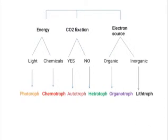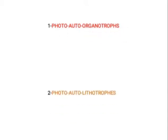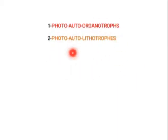We can classify bacteria on the basis of those three factors into eight categories. Photo-auto-organotrophs are bacteria which get energy from light, do CO2 fixation, and use an organic compound as the source of electrons in the electron transport chain. Photo-auto-lithotrophs get energy from sunlight and do CO2 fixation, but use an inorganic compound as the source of electrons in the electron transport chain.